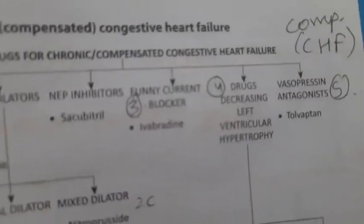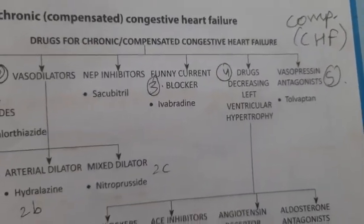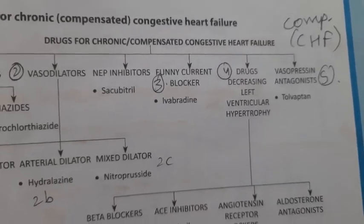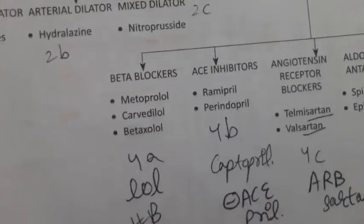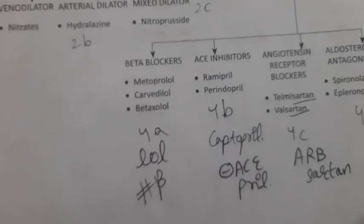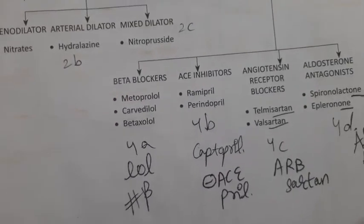Funny channel blockers — for example, ivabradine. Drugs decreasing left ventricular hypertrophy include beta blockers such as metoprolol, carvedilol, and bisoprolol.